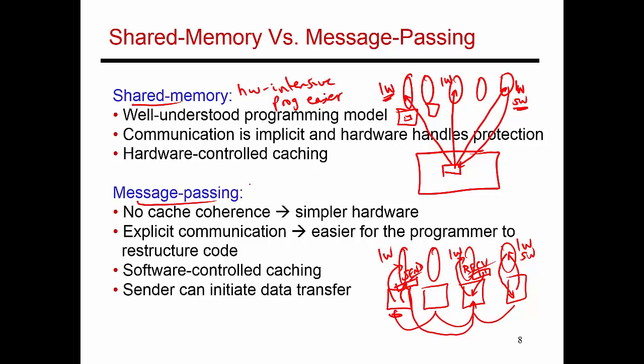The message passing model is not hardware intensive, so it works with very simple hardware. But the programmer is responsible for data exchange. In some sense, it is software cache coherence where if you have a value that somebody else needs to see, you have to explicitly send that message to whoever needs to see it. Those are the major trade-offs.